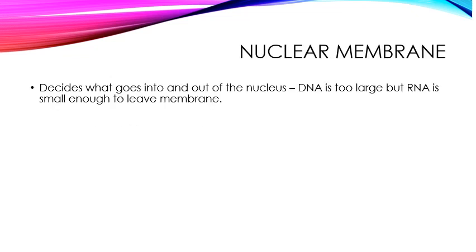The nuclear membrane is like a cell membrane except this one is specifically around the nucleus. So it decides what goes into and out of the nucleus. DNA is too large to move through the membrane, but RNA is small enough that it is allowed to leave the membrane. So DNA will always stay in the nucleus and RNA may leave it.